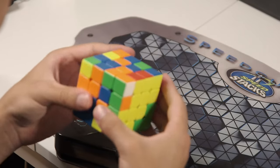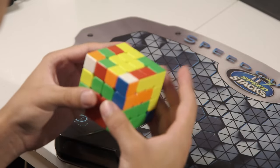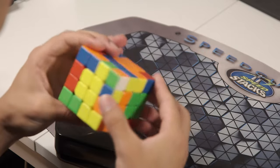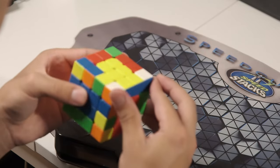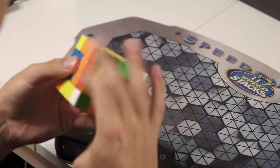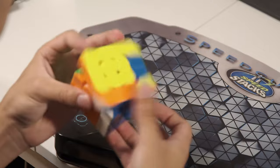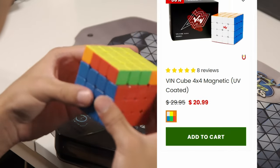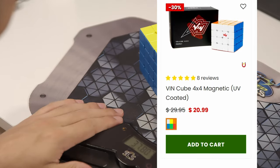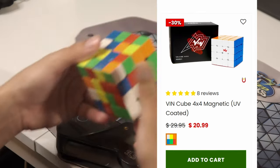After slightly tightening all six center screws and using SpeedCubeShop lubes to set it up, I've only managed to make this thing pop once, and it wasn't even one of those pesky white inner pieces - it was just an edge piece. Great cube, highly recommend! The previous VinCube 4x4 version that's still UV coated but without a ball core is currently $20.99 at SpeedCubeShop.